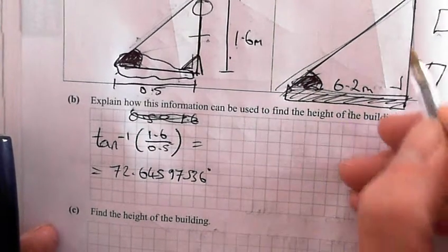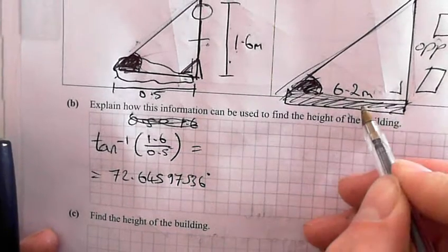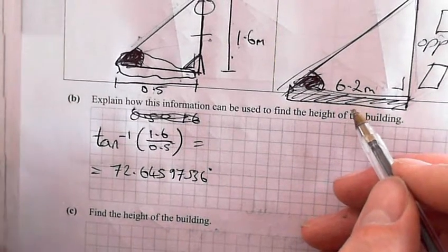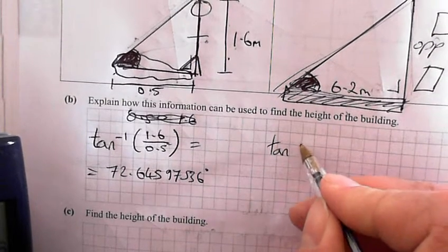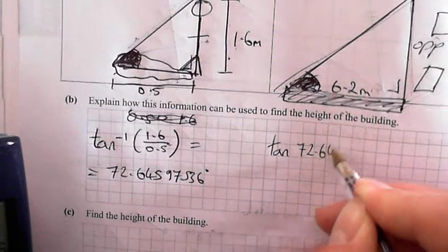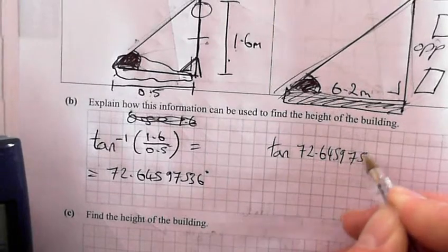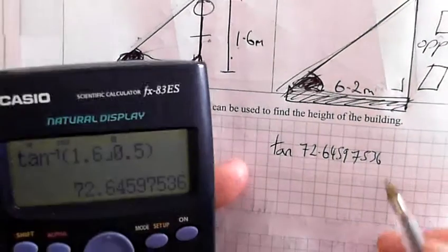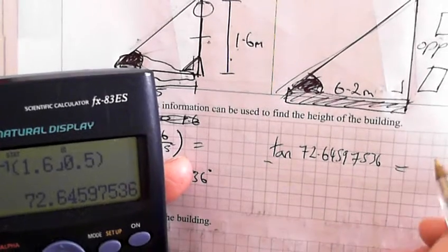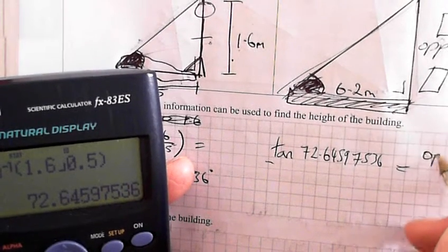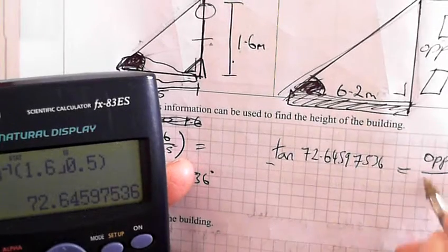So over here, this is the opposite and this is the adjacent. So we use tan again. Tan of 72.64597536 equals opposite, which we don't know, over adjacent 6.2.